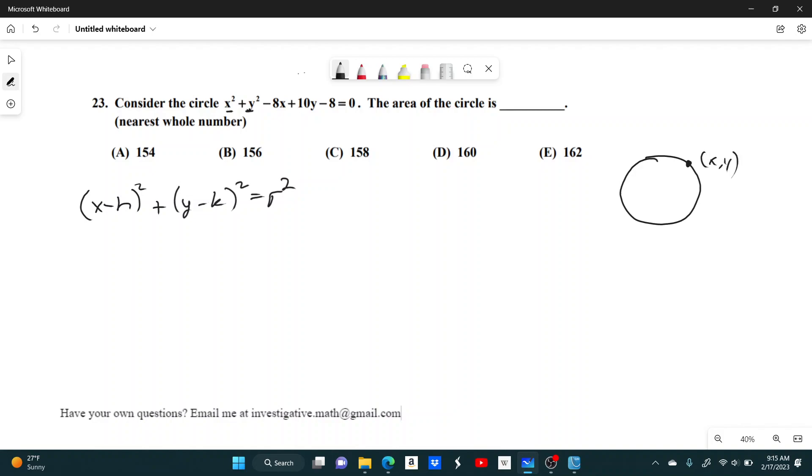And then this h and k, that's actually the center of your circle. So the center would have coordinates of h comma k. And then r, you might have guessed, is just the radius of your circle or the distance from the center to x comma y.